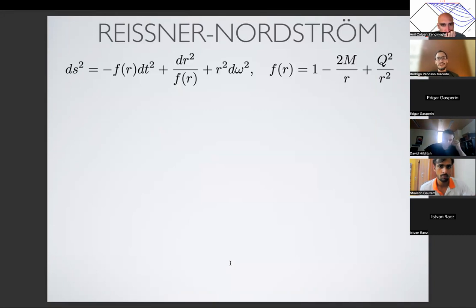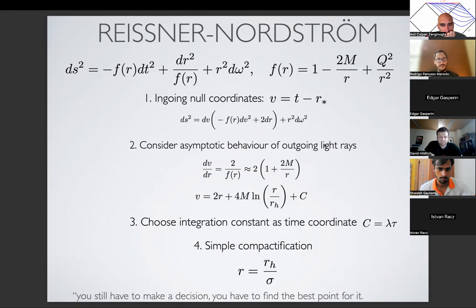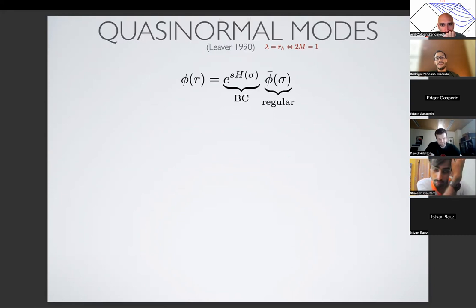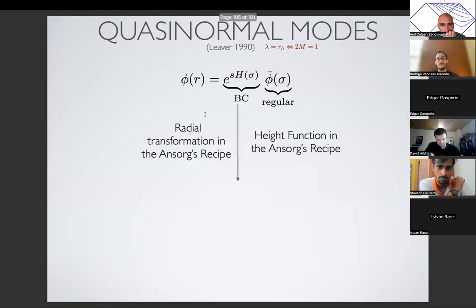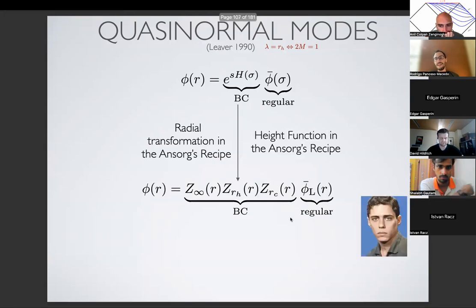I'm excited and I move on to Reissner-Nordström. Here I follow the recipe: ingoing null coordinates, asymptotic expansion, choose the coordinate, simple compactification. And then I try to go back to Leaver — he also did Reissner-Nordström in 1990. I said, yeah, it has to be the same. If I plug in the height function I'm getting from the Anzorge recipe, I should recover what Leaver did for Reissner-Nordström. So I put these transformations, put the height function, and compare what Leaver was doing. There are prefactors taking into account infinity, the event horizon, and the Cauchy horizon — and I get frustrated. They don't agree.